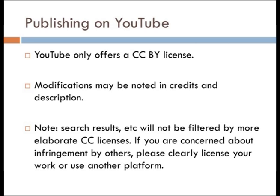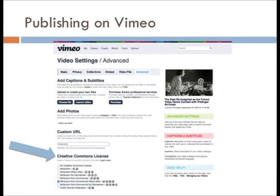If you want an interface that allows finer control over how you license your work when uploading a video, you can go to the video settings, and in the advanced video settings you can add captions, photographs, a custom URL, and also choose which Creative Commons license you want to use. I'm going to show you all a bit about how to look through the Free Music Archive.